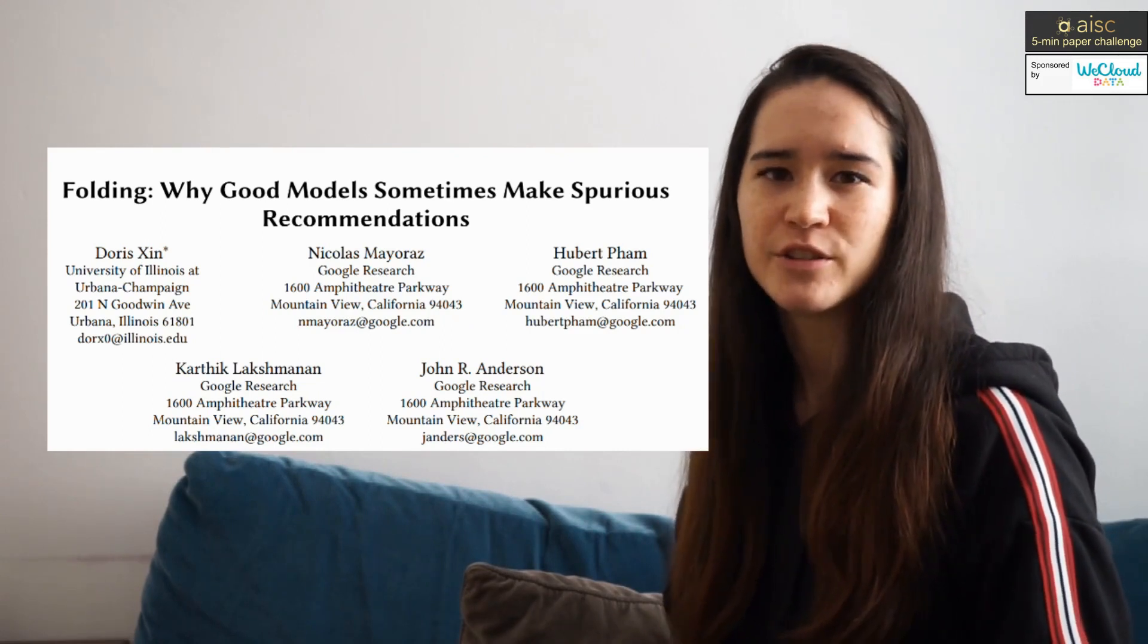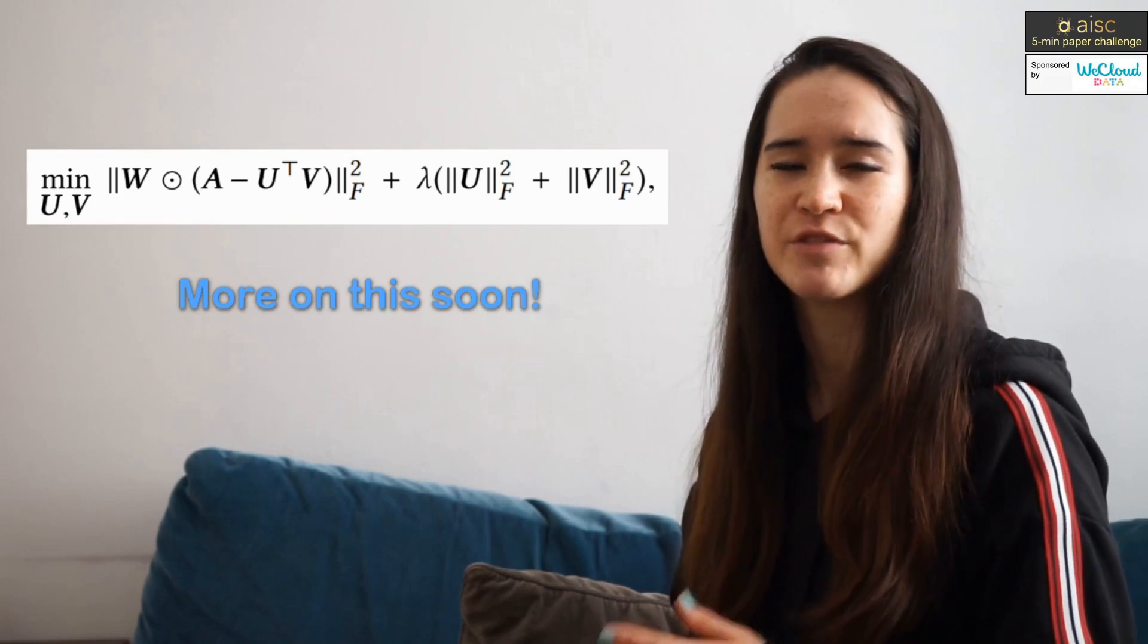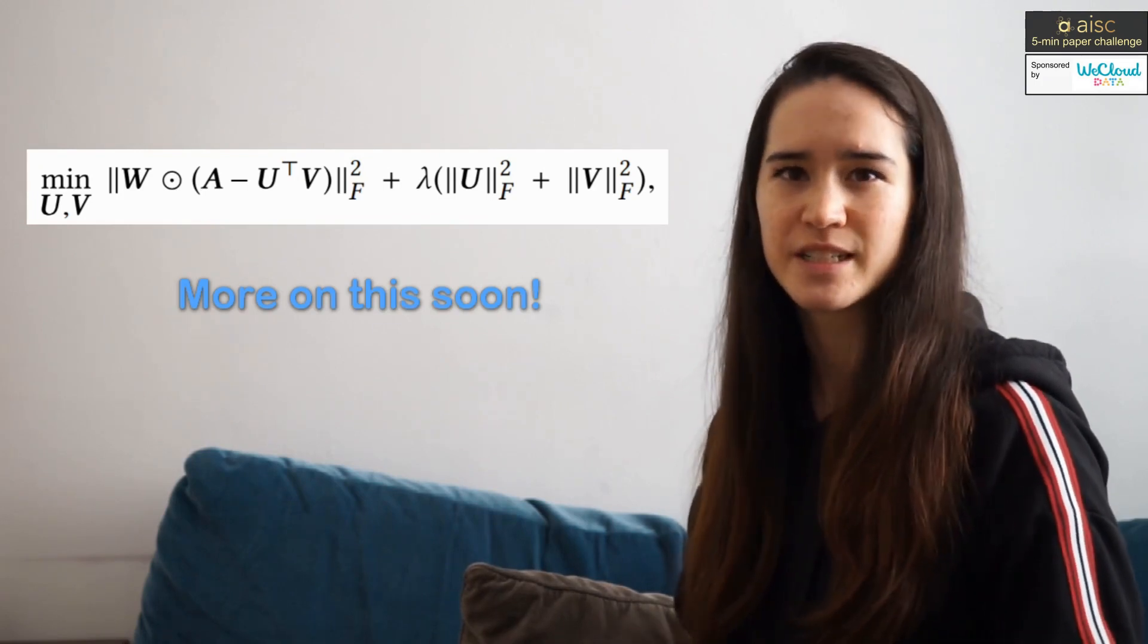Spurious recommendations occur in recommender systems that are built using the classical approach of low-rank factorization of a partially observed user item matrix. Semantically, a spurious recommendation is one that's inappropriate for the user. A concrete example that I'll refer to throughout this video is recommending a horror film to a child.